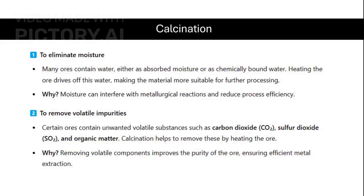Calcination serves to eliminate moisture and volatile impurities from ores. By heating, it drives off absorbed or chemically bound water, enhancing the material's suitability for metallurgical reactions and improving processing efficiency.